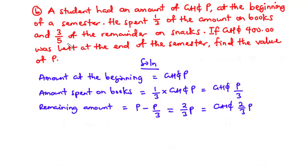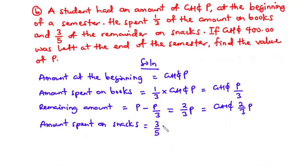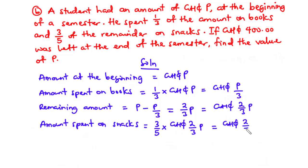The student spent three-fifths of the remainder on snacks. The amount spent on snacks is 3/5 times 2/3 P. The 3s cancel, leaving 2/5. So the amount spent on snacks is 2/5 P.